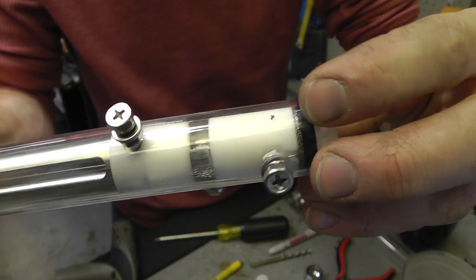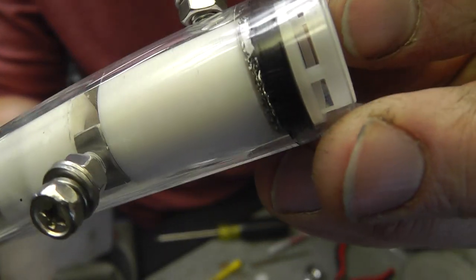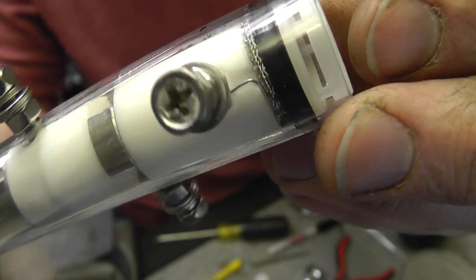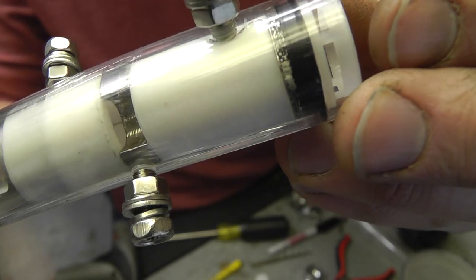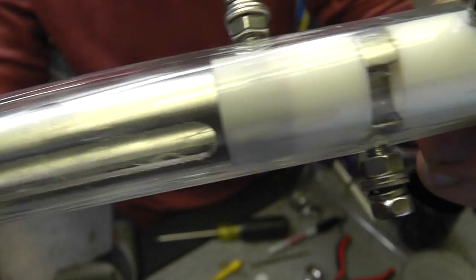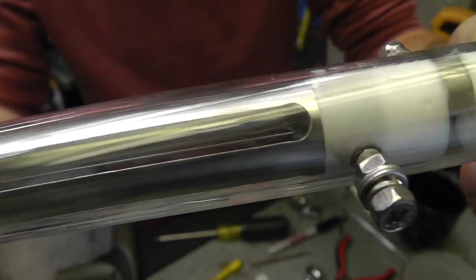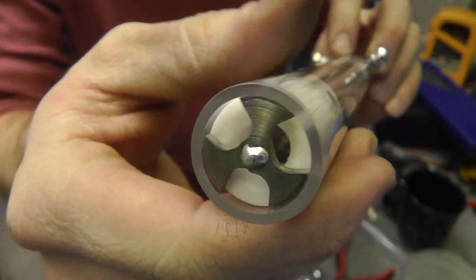Got my screws set in there, extraction grid in there, electrical connection right there. That actually worked really well. And electrical connection to the inner electrode and outer electrode. And we'll move on to assembly.